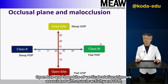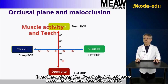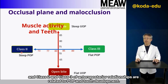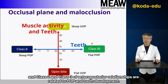Open bite and deep bite of vertical relationships are associated with muscle activity and UOP, and class II and class III of anteroposterior relationships are related to POP and tooth development.